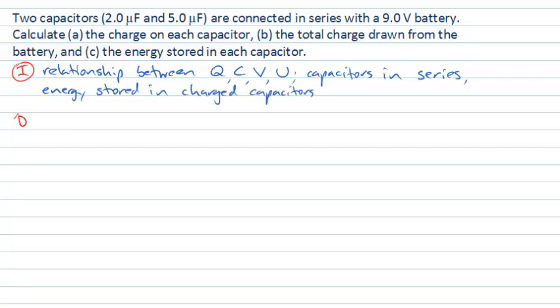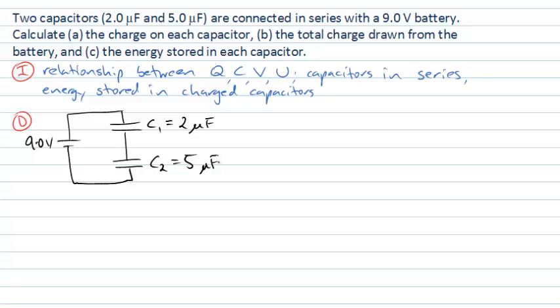So let's move on to the development stage of our solution. We might begin by drawing a small diagram of our circuit. There's a battery there, and there's two capacitors attached to that battery in series, as shown. We have 9.0 volts. Let's call this capacitor 1, our 2 microfarad capacitor, and capacitor 2, which is our 5 microfarad capacitor.